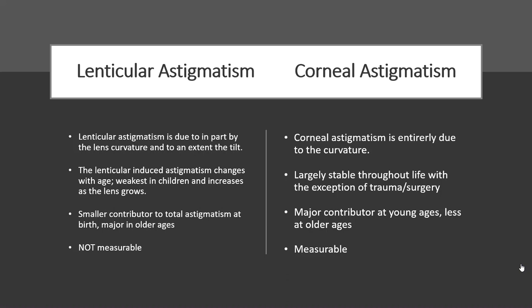Let's compare that to corneal astigmatism. Corneal astigmatism is entirely due to the curvature of the cornea, and it's largely stable throughout life with the exception of trauma or surgery to the cornea itself. It's a major contributor of astigmatism at young ages and less at older ages, and it is measurable through keratometry or corneal topography.